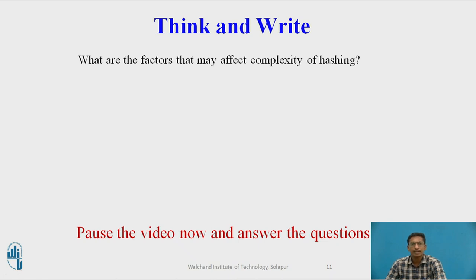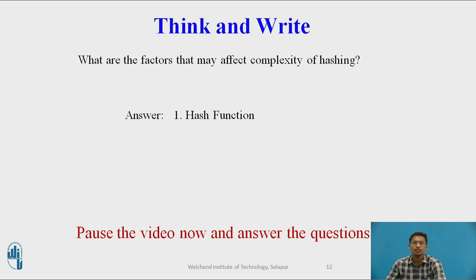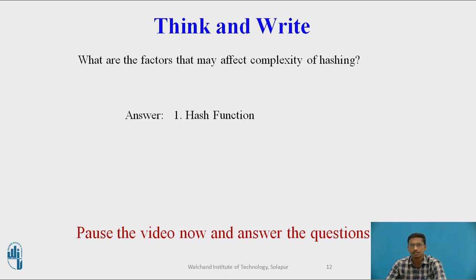Find out the answer to this question: what are the factors that may affect the complexity of hashing? You can pause the video and answer. The important factor which affects the complexity of hashing is the hash function. Input elements are not inserted directly inside the hash table — they are first passed to the hash function, which returns a value representing the location where to store that input value. The hash function is the most important part of hashing.